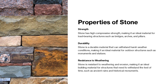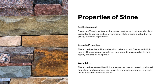Stone is resistant to weathering and erosion, making it an ideal building material for structures that need to withstand the test of time, such as ancient ruins and historical monuments. Stone also has aesthetic appeal — visual qualities such as color, texture and pattern make it a very versatile material. Marble is prized for its veining and color variations, while granite is valued for its grainy speckled appearance. Regarding acoustic properties, stone has the ability to absorb or reflect sound.